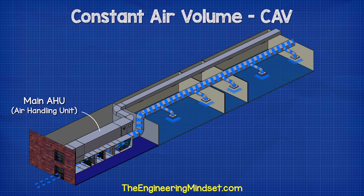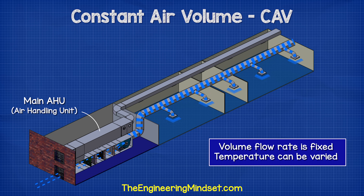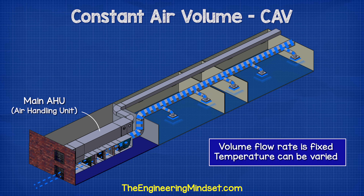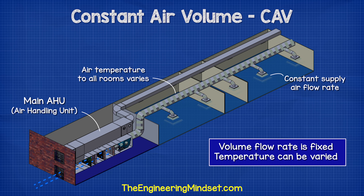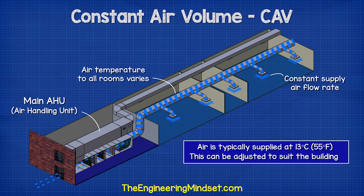CAV systems do have some limitations because their supply air temperature is varied but the volume or flow rate of air being supplied is kept constant. While the system is operating it provides air at a consistent and constant volume and only the temperature of the air changes. Typically, the air is provided at around 13 degrees Celsius or 55 degrees Fahrenheit, but this can be adjusted to suit the needs of the building.